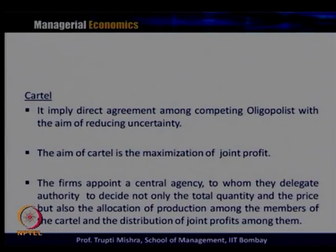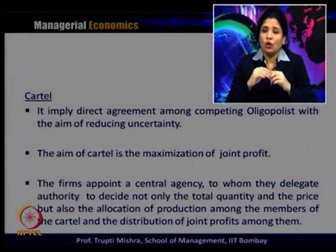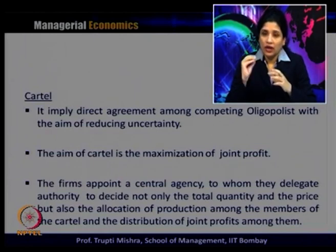A cartel is a direct agreement among competing oligopolists with the aim of reducing uncertainty. The optimization problem for the oligopolist is to reduce uncertainty. The aim of the cartel is to maximize joint profit. They appoint a central agency and delegate authority to decide not only the total quantity and price, but also the allocation of production among members and the distribution of joint profit among them. The aim to form the cartel is to reduce uncertainty; the objective is to maximize joint profit.